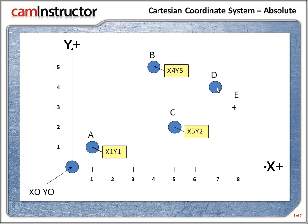Now position D. So the X value would be 7 and the Y 4. So for position D X plus 7 Y plus 4.